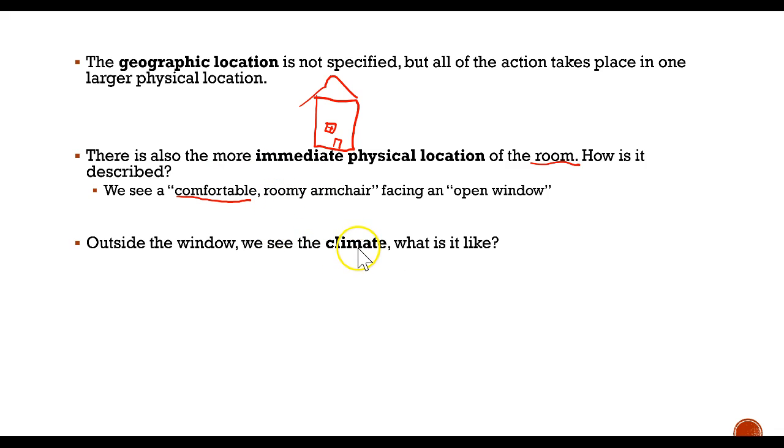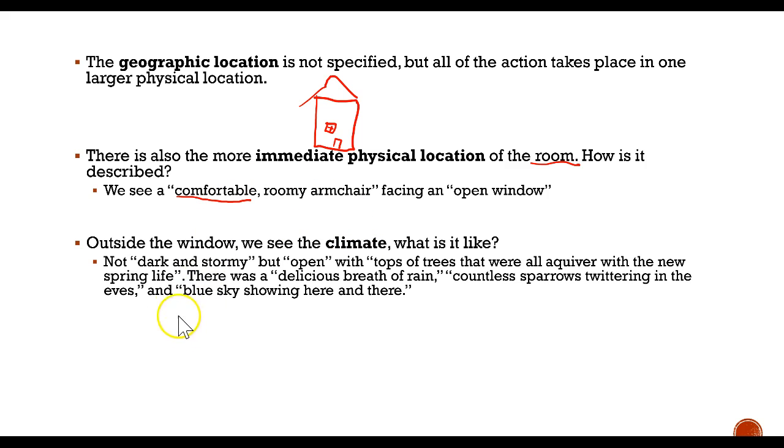And outside the window, the climate is also not what you would expect. You would expect somebody who just lost her husband to be looking into dark and stormy area, cold and windy. But instead, when Mrs. Mallard looks outside, she sees that it's open and that the treetops are all a quiver with new life, new spring life. And there's a delicious breath of rain and there's countless sparrows twittering in the eaves. And there's blue sky showing here and there. It's really a beautiful setting. She's experiencing a kind of renewal and that sort of goes with her state of mind at that time. And this is something to always pay attention to. A lot of times the setting tells us about the character's state of mind and what they're feeling, especially the way they see the setting.